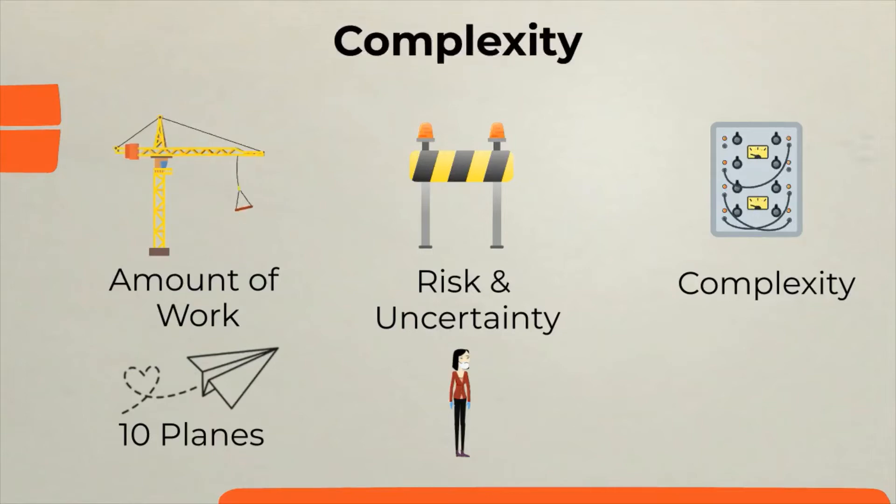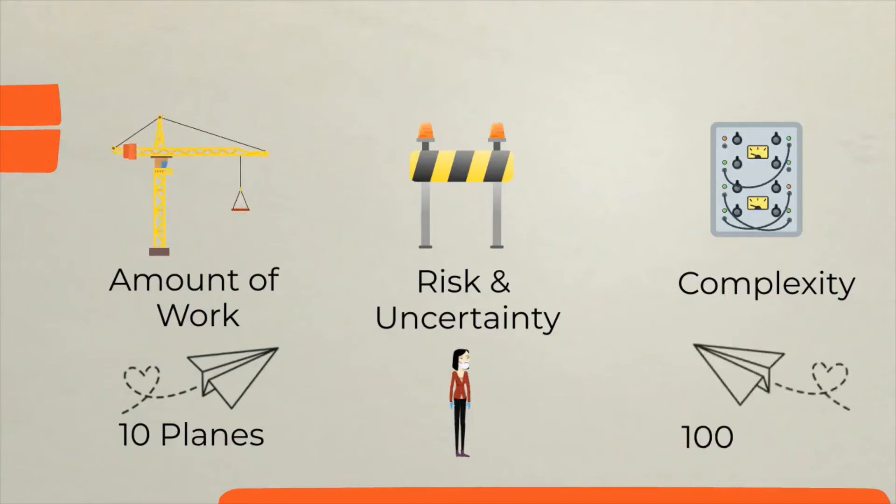Last thing to be considered when estimating is the complexity. Complexity should also be considered when providing a story point estimation. Think back at the example of folding 100 planes instead of 10. Imagine now that the task is to fold 100 planes and to paint them. In this case, even though we are still folding 100 planes, but there is more complexity to it, and it should be reflected in the story point estimation.